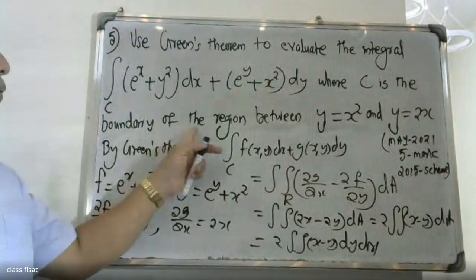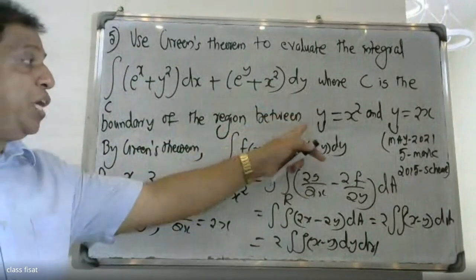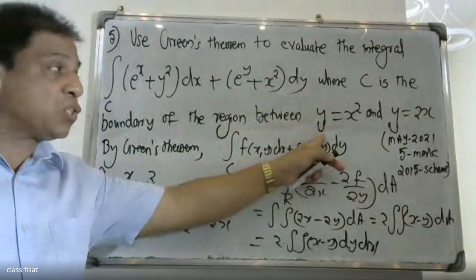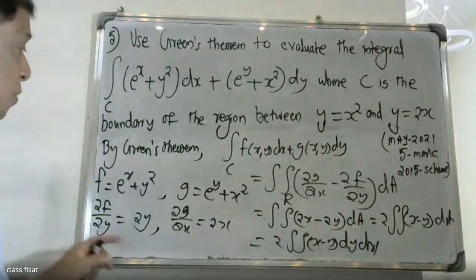The boundary of the region is between y equal to x squared and y equal to 2x. Now we have to figure out the limits of integration for this region.